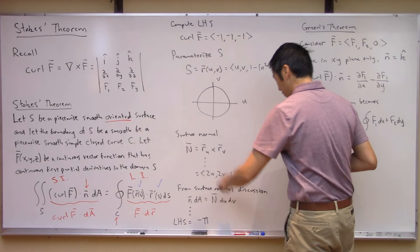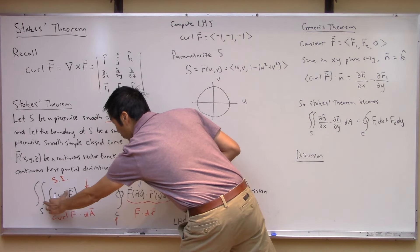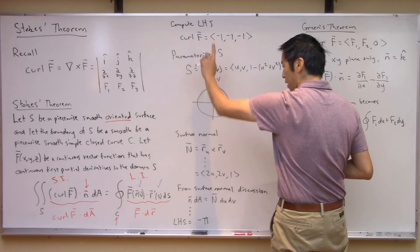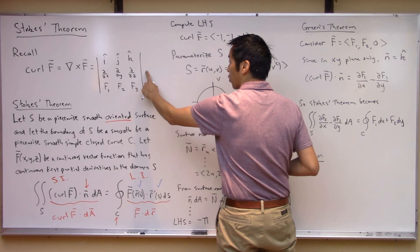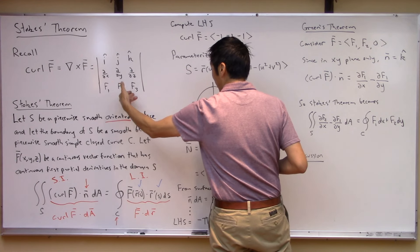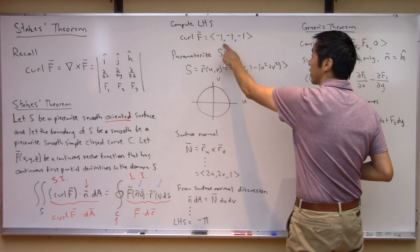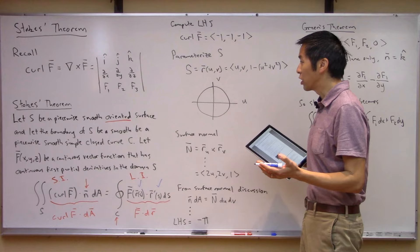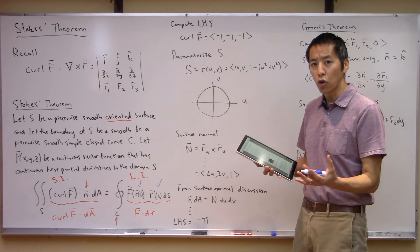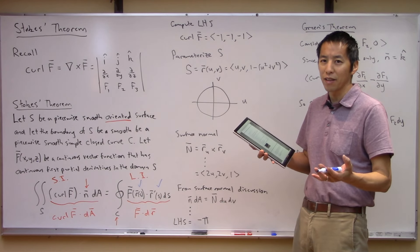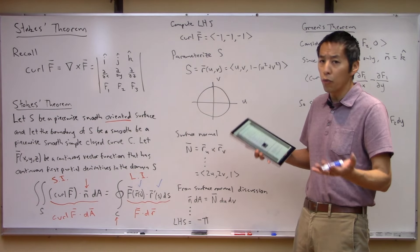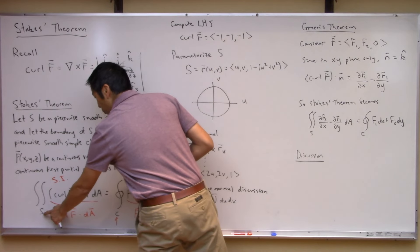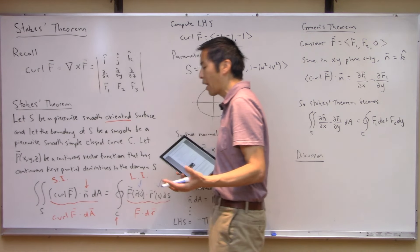Now let's compute the left-hand side — the surface integral of the curl of F. First, we compute curl of F. Given the vector function, you run it through the curl expression and take all the relevant partial derivatives. It turns out the curl of F is negative one, negative one, negative one. It's actually a relatively simple operation — when you take the curl, you're effectively taking partials and adding and subtracting things, so it can simplify nicely.